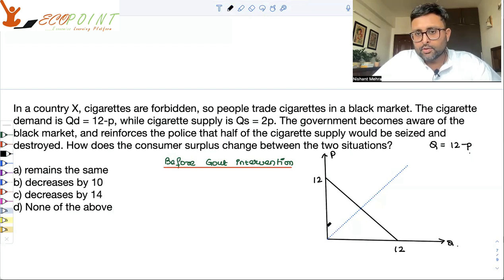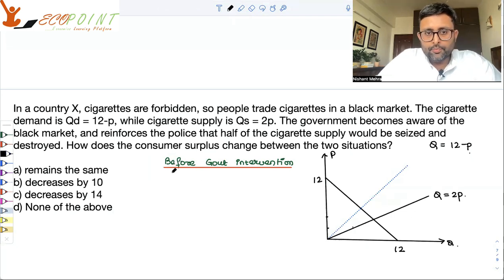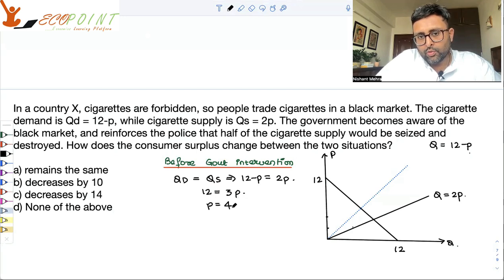So this is going to be Q equals 2P. All right, Q is equal to 2P. Q is equal to 2P.